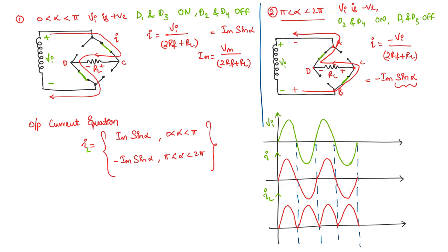In the waveform diagram, the input voltage is sinusoidal and even the transformer current is sinusoidal. However, the current through the load — and correspondingly the output voltage, which is output current times the load resistor — appears as a full wave rectified sinusoid.